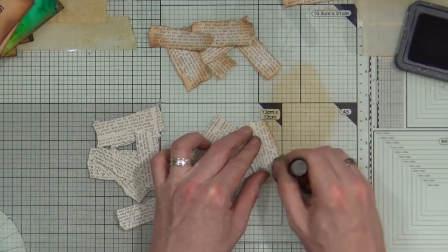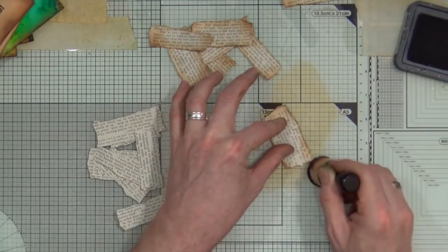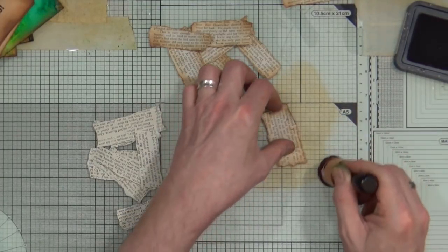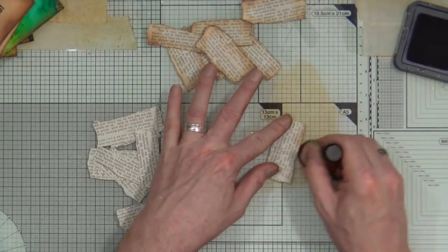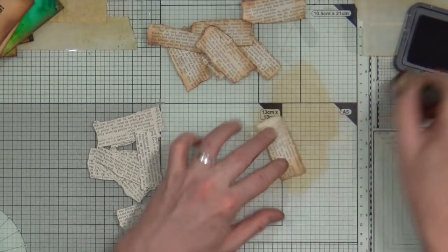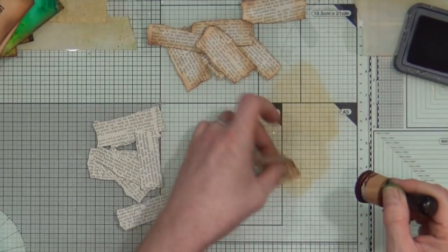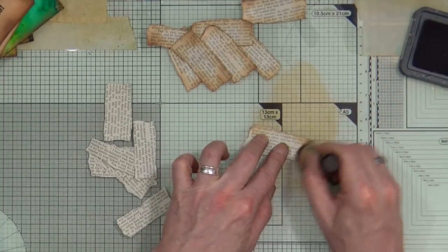I need to distress all of the edges of these little pieces of book text, torn fragments of book text. And because I want to add two to each card, that means I have to do 20. So as you can see, I'm just quickly going around adding that vintage photo just all around the edges. It's not going to take long to do.